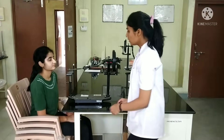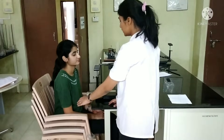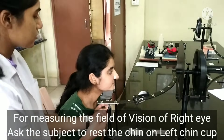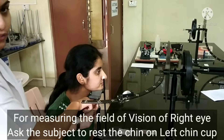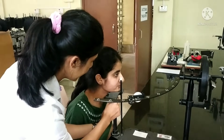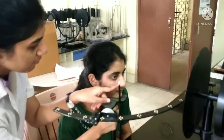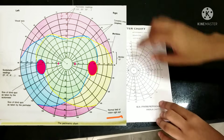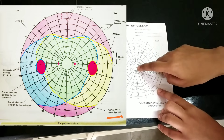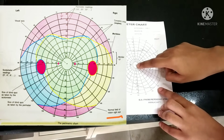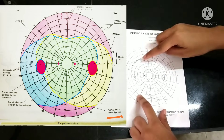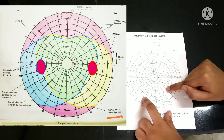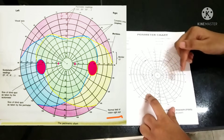Let us start with the procedure. I will ask my subject to sit comfortably on the chair. We will be measuring the field of vision for the right eye, so the subject keeps the chin on the left chin cup and we adjust the height so that the tip of the rod matches the lower eyelid. The perimetry chart has a central hole that corresponds to the visual axis of the eye. This is the visual field for the left eye, and this is the visual field for the right eye. The concentric circles are called isopters, present at an interval of 10 degrees each.